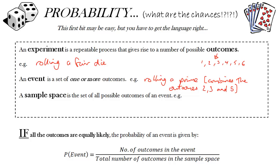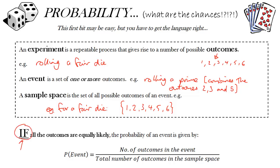Rolling a prime number combines several outcomes: getting a two, a three, or a five. Finally, a sample space is just the set of all possible outcomes. We'll see that it can be represented by a table or in other ways, but here we can use a simple list: one, two, three, four, five, and six.